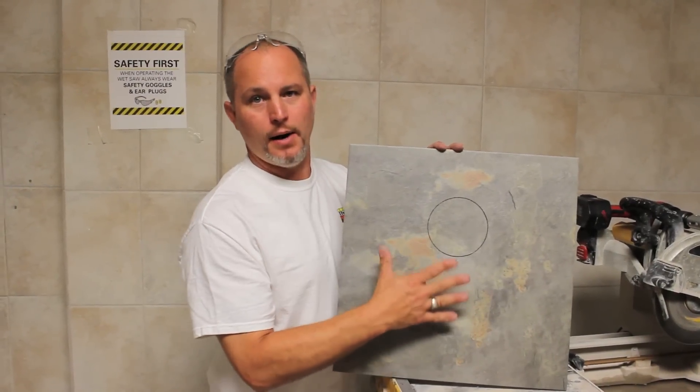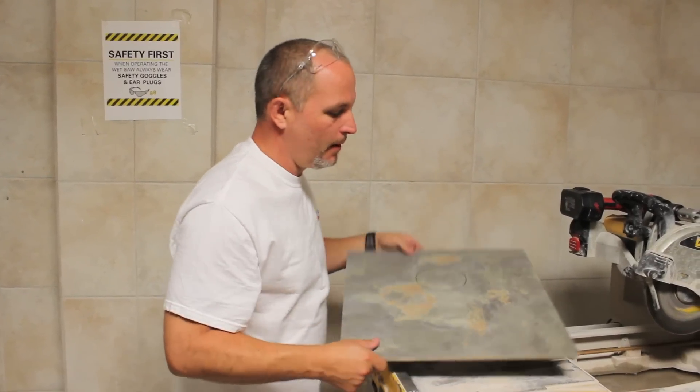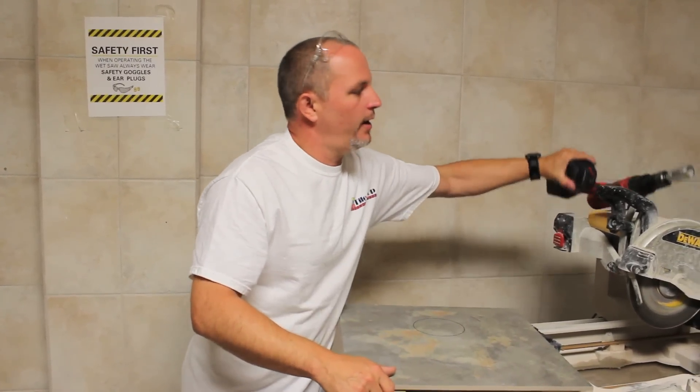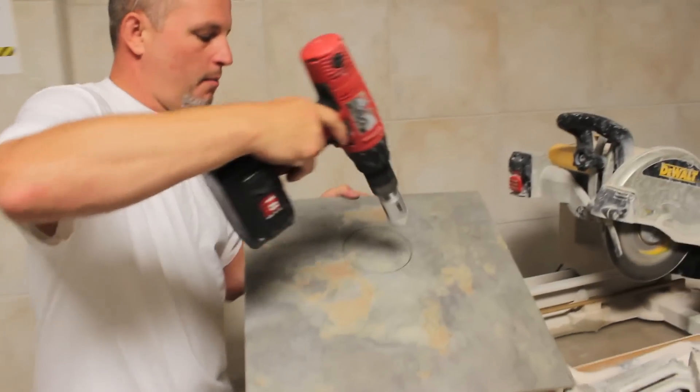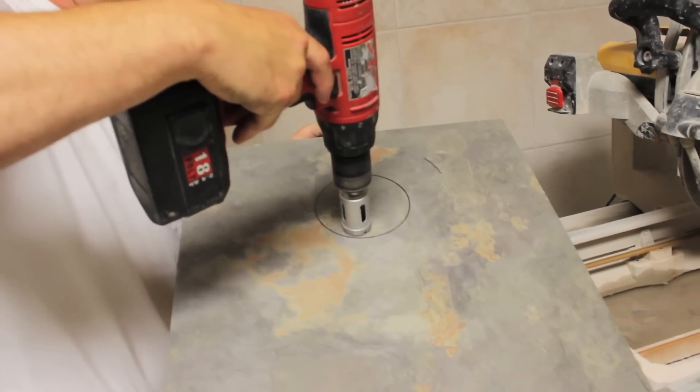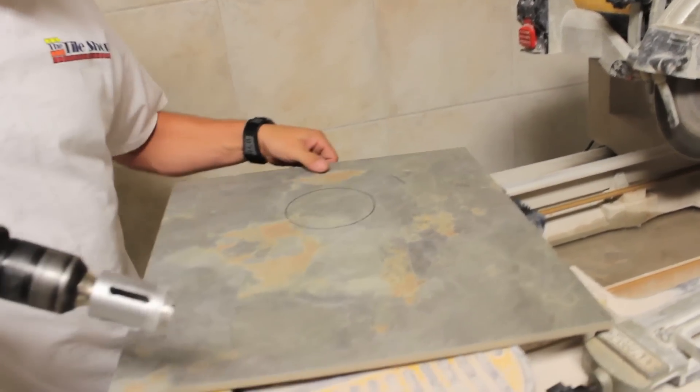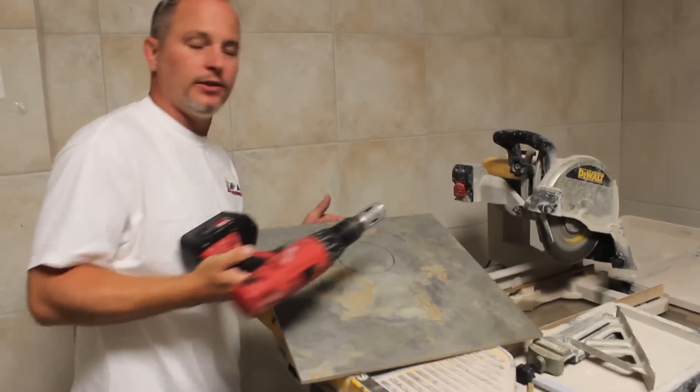The two ways that we're going to talk about doing a hole cut out would be, number one, we can use a hole saw on a drill and we can make multiple plunge cuts with this hole saw in a circular fashion and then knocking them out and then using nippers to clean up the edges.